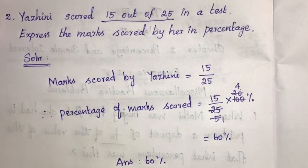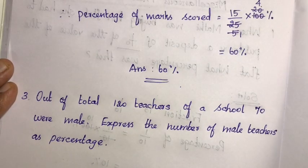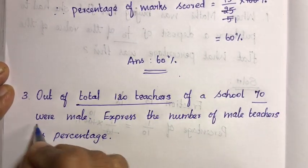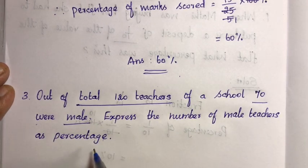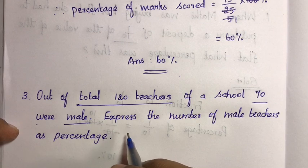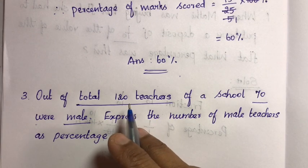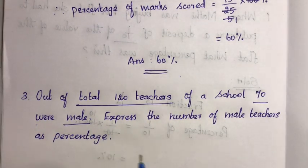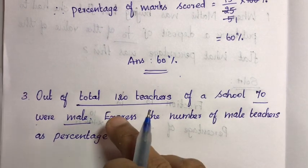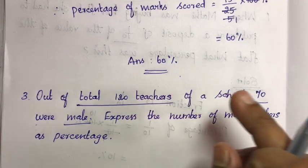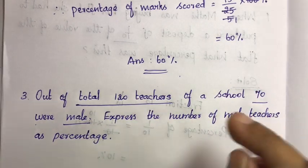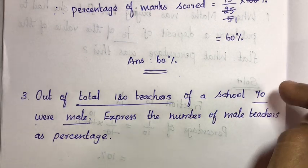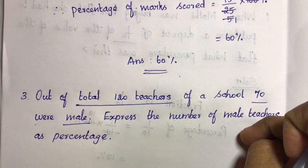Next, third question. Out of total 120 teachers of a school, 70 were male. Express the number of male teachers as a percentage. Total is 120, male teachers are 70. So the fraction is 70/120 — total is the denominator, the given data is the numerator. Male teachers as a percentage.